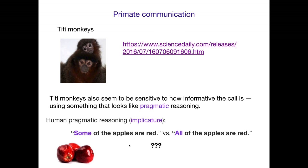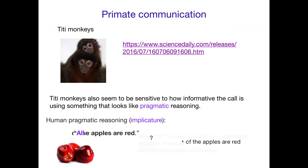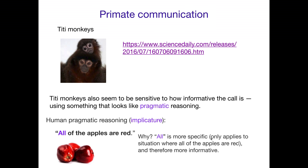But something feels off about it. It feels much better, given this situation, to describe this as 'all of the apples are red.' Why? Because 'all' is more specific — it only applies to the situation where all of the apples are red, whereas 'some of the apples are red' is technically true in this situation but also true when only two of the apples are red. So 'some' is true in more situations, 'all' is true in fewer situations, so it's more specific.